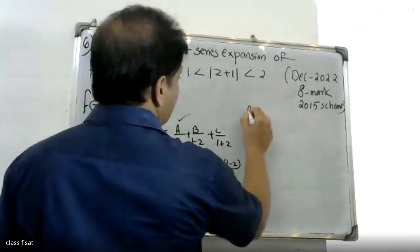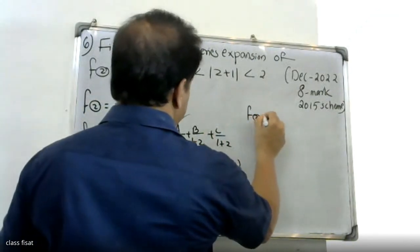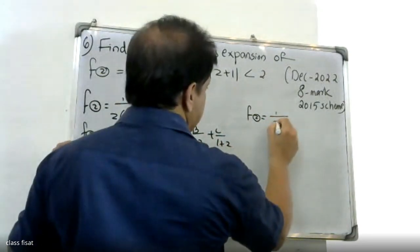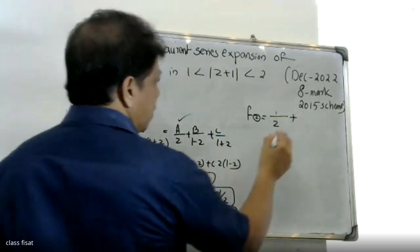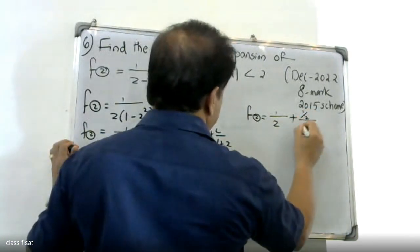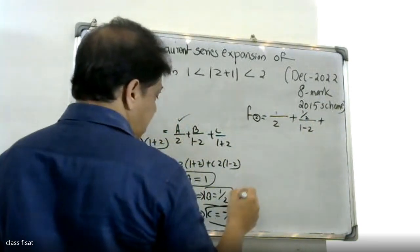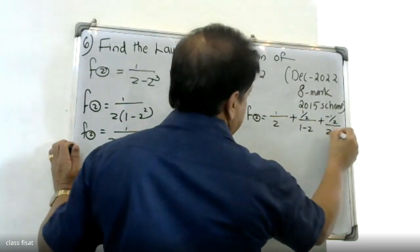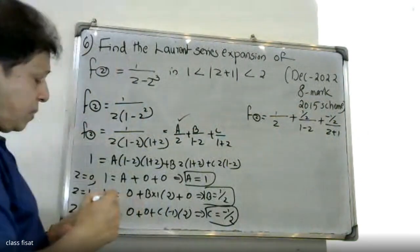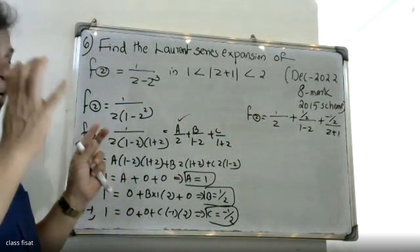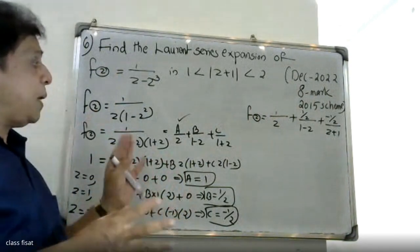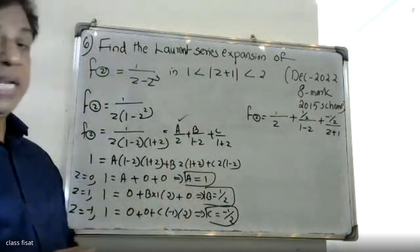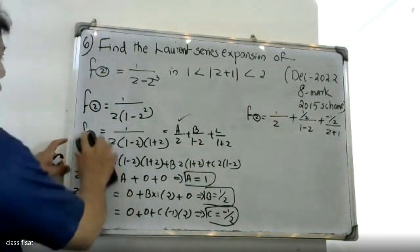Then we will make a function. F(z) is equal to A by z, which is 1 by z, plus B value: 1 by 2 into 1 minus z, plus C value: minus 1 by 2 into z plus 1. Look at the minus 1. B value: 1 plus z equals 1 by 2 minus 1. Then here we will use the Laurent series expansion — the entire point of the Laurent series expansion.